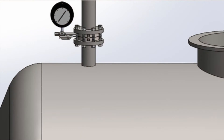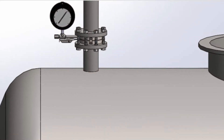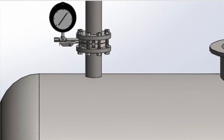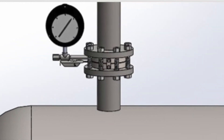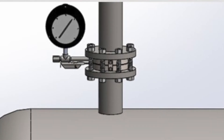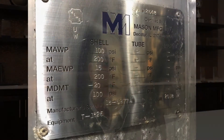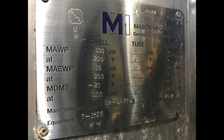First, we're going to talk about primary relief. When a rupture disc is used in primary relief applications, that rupture disc is considered the main or sole source of pressure relief for that pressure vessel or system. Whenever you have a rupture disc specified for primary relief, the most important thing to remember is that the rupture disc's burst pressure and temperature should not exceed the maximum allowable working pressure of that vessel or system.